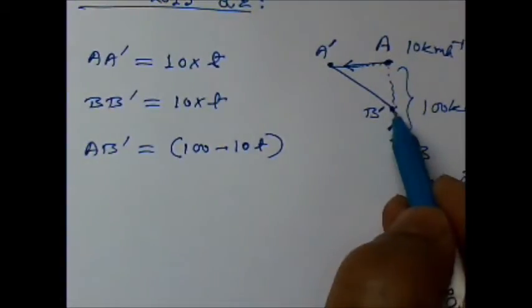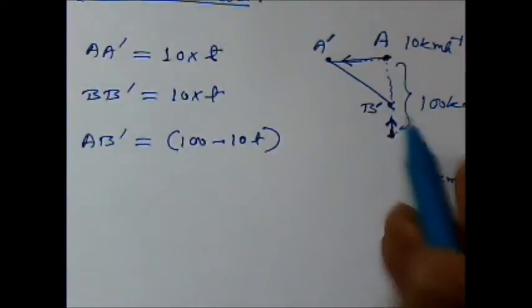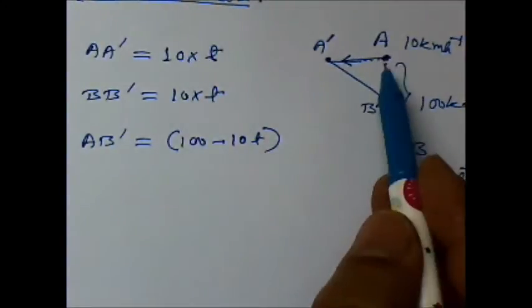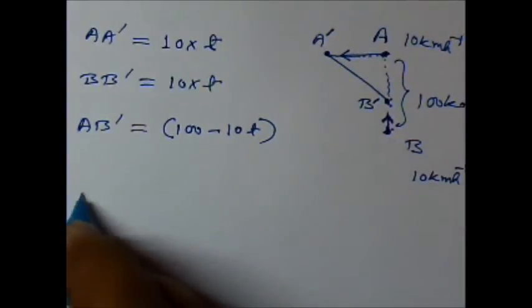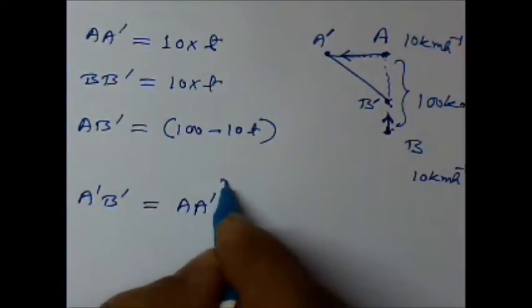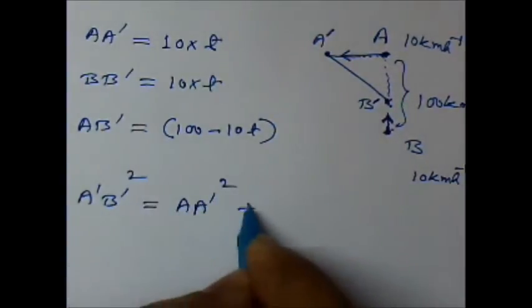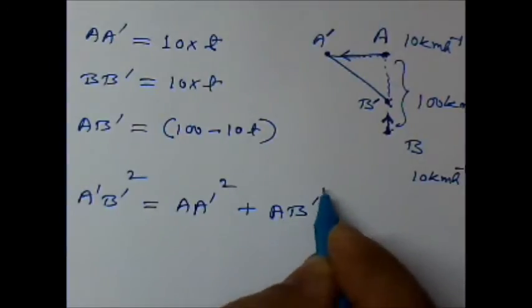Now we have to find the minimum value of A dash B dash. So for that, in this triangle, triangle AA dash B dash, if we use Pythagoras theorem, then A dash B dash squared is equal to AA dash squared plus AB dash squared.